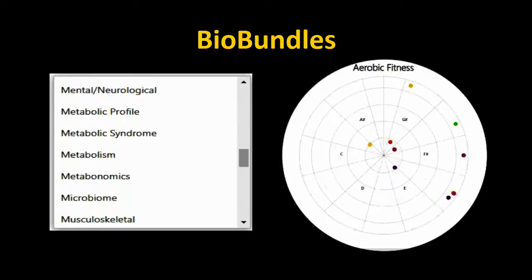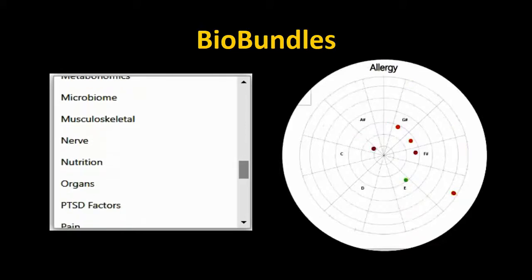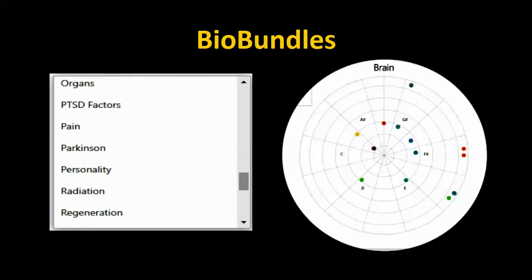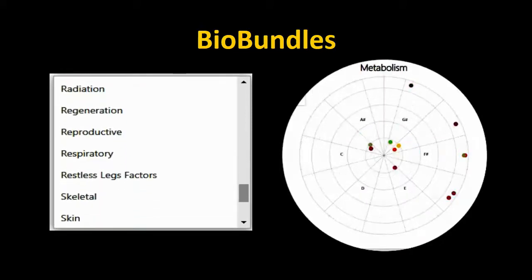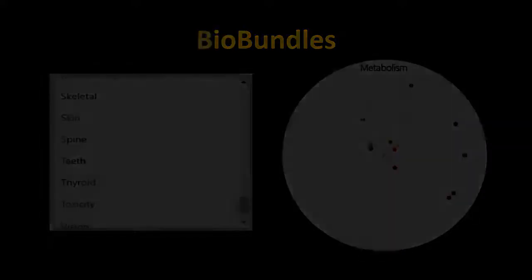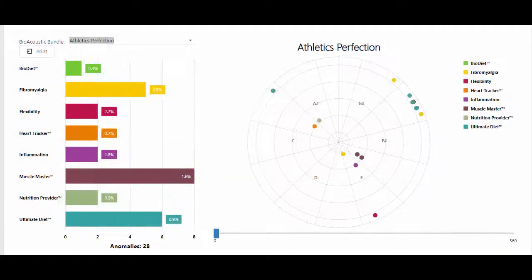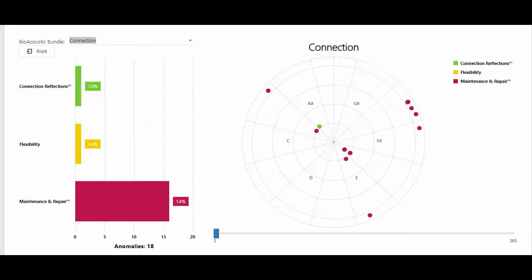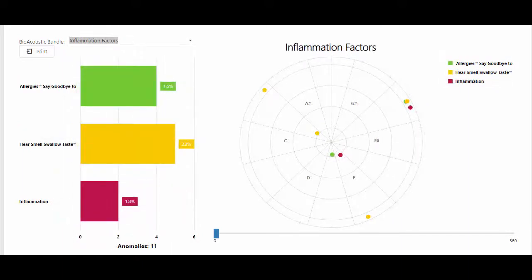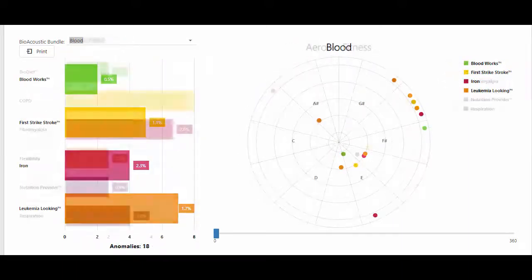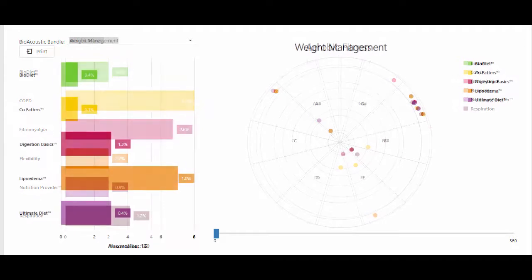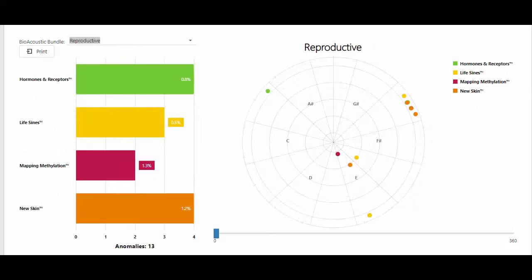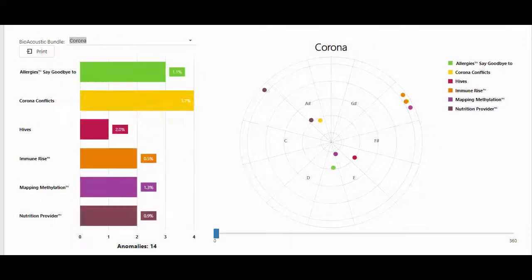For example, a nutritionist might begin an evaluation using bio-bundles peculiar to nutrition. A chiropractor may start with musculoskeletal or connective tissue bio-bundles. Complaints or curiosities may also guide the selection of certain bio-bundles.